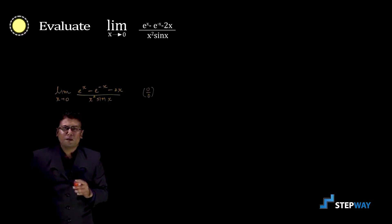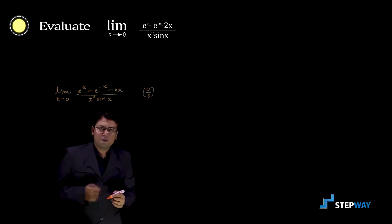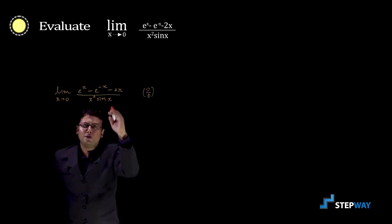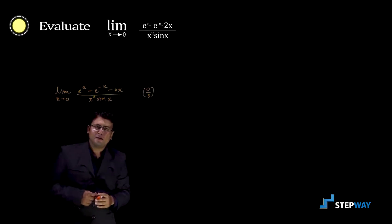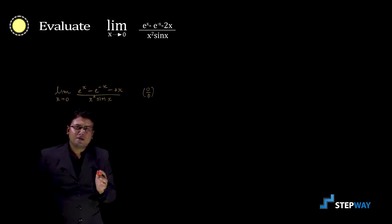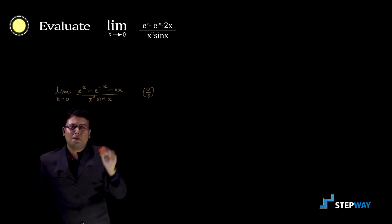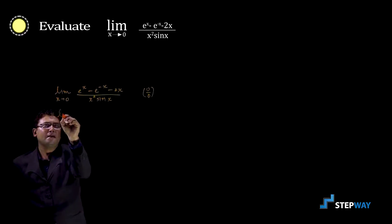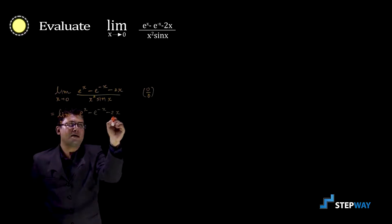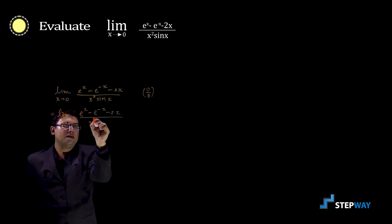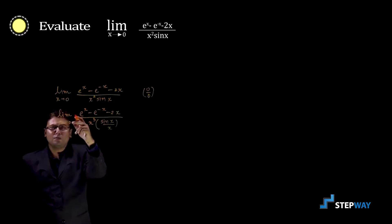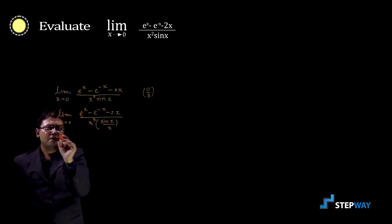To evaluate this indeterminate form we apply L'Hôpital's rule, which means differentiating the numerator and denominator separately with respect to x. But for easy simplification, we first multiply and divide by x in the denominator, because we know that limit x tends to 0 of sin x upon x equals 1. So we multiply by x to get x cubed in the denominator and divide by x, giving sin x upon x. Since that limit equals 1, this factor becomes 1.